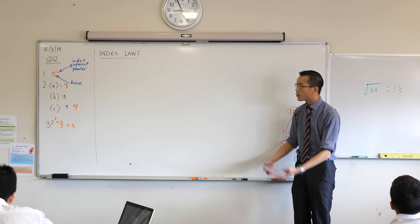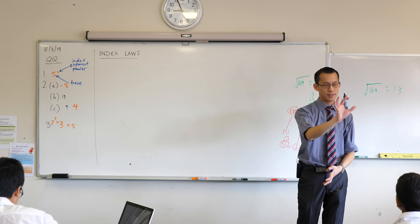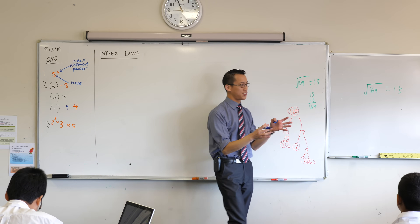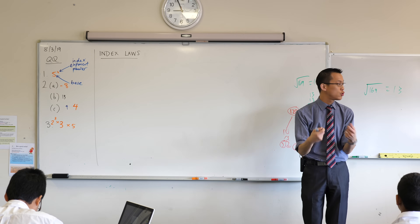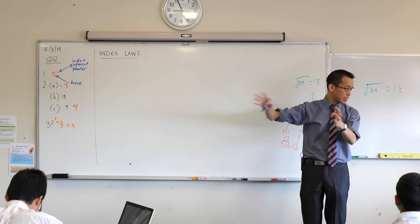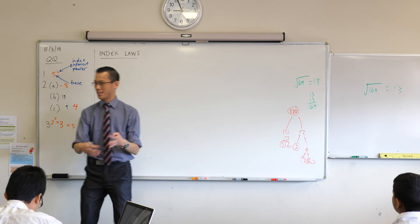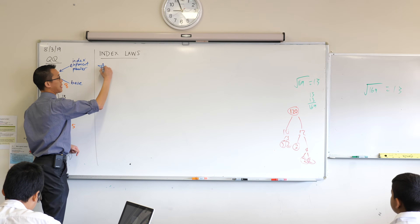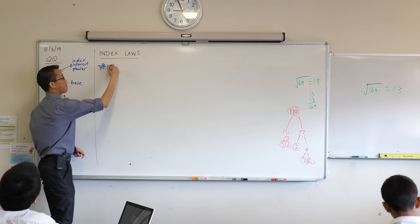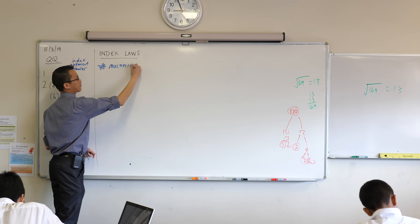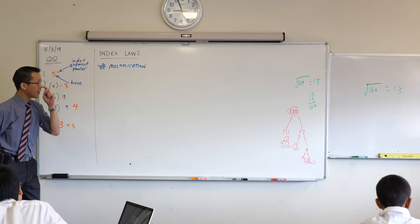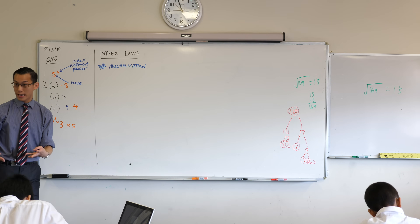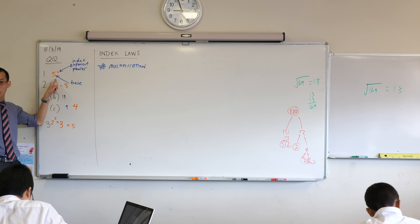So we know what index notation is — we can translate five times five times five times five into index notation. But index laws are not about translation; they're actually about transaction. Can we do things together when we've got lots of things with indices? Index notation is like a shorthand, an abbreviation of multiplying lots of things. So if we think about multiplying things together in this form, I'm going to give you a few examples and we'll see if we can draw some conclusions.